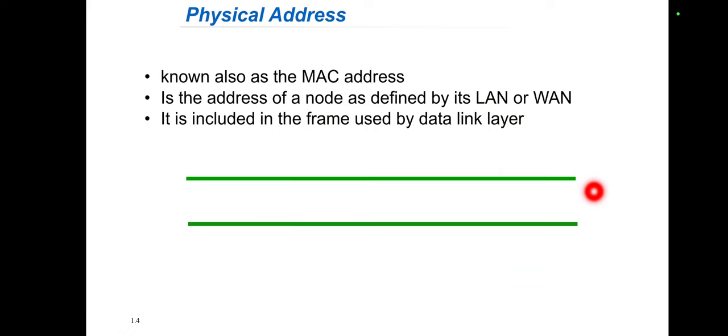The first is the physical address. This address is also known as the MAC address, that is the Medium Access Control address. This address is defined by its LAN or WAN, that is Local Area Network or Wide Area Network. It is included in the frame used by the data link layer. The physical address in the datagram may change from hop to hop.